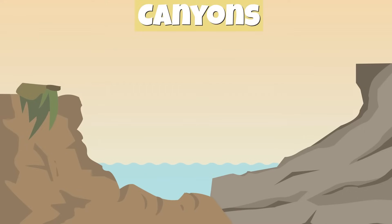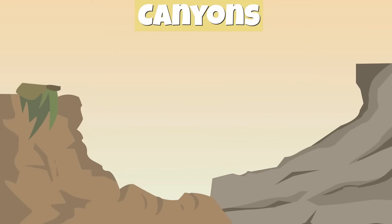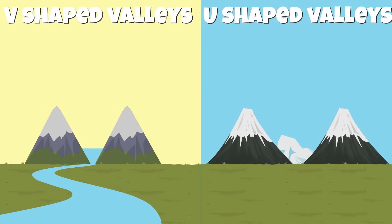Canyons are formed through the process of weathering and erosion. Moving water cuts through land and rocks and moves these sediments out, forming canyons. V-shaped valleys are created by water and running rivers, and U-shaped valleys are created by glaciers.